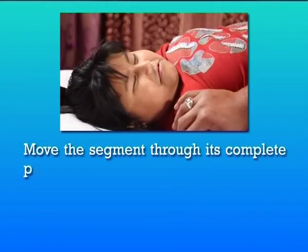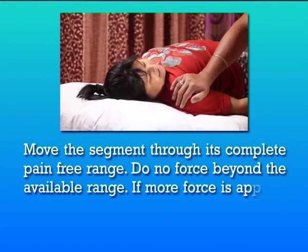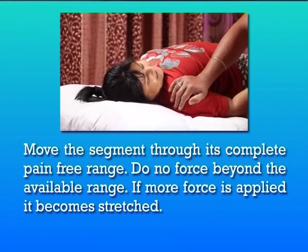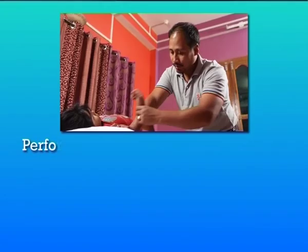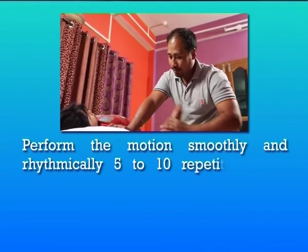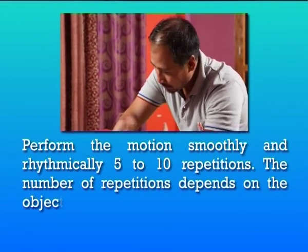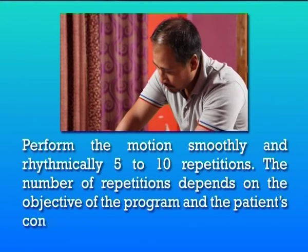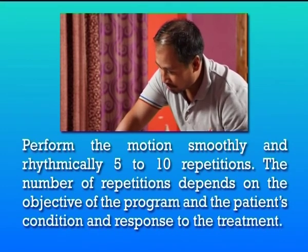Move the segment through its complete pain-free range. Do not force beyond the available range; if force is applied it becomes a stretch. Perform the motions smoothly and rhythmically, 5 to 10 repetitions. The number of repetitions depends on the objective of the program and the patient's condition and response to treatment. If the plan of care includes passive mobilization, no active resistance or assistance is given by the patient's muscles crossing the joint; if so, it becomes an active exercise. The motion is carried out within free range of motion, that is the range available without forced motion or pain.